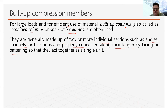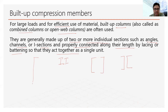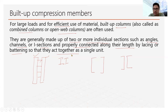These individual sections act together as a single unit. There may be a combination of channel sections in different configurations, and two eye sections can be combined together as well. Along the length they will look like this. To connect these two sections, we generally use some connections — either the lacing system or the batten system.